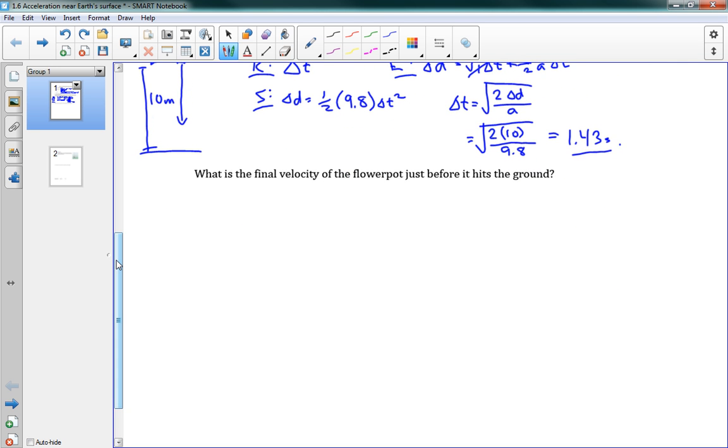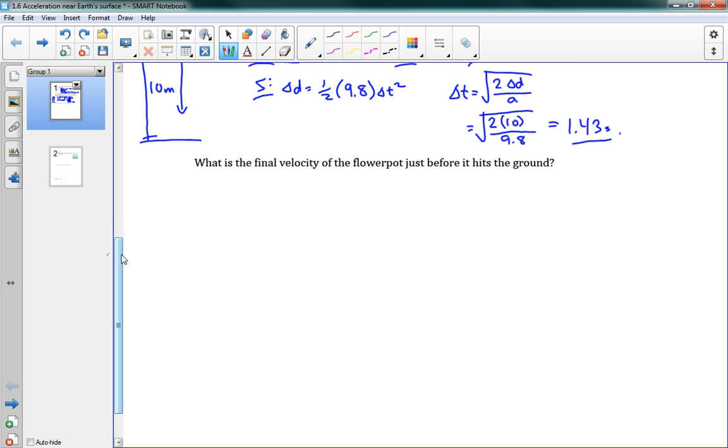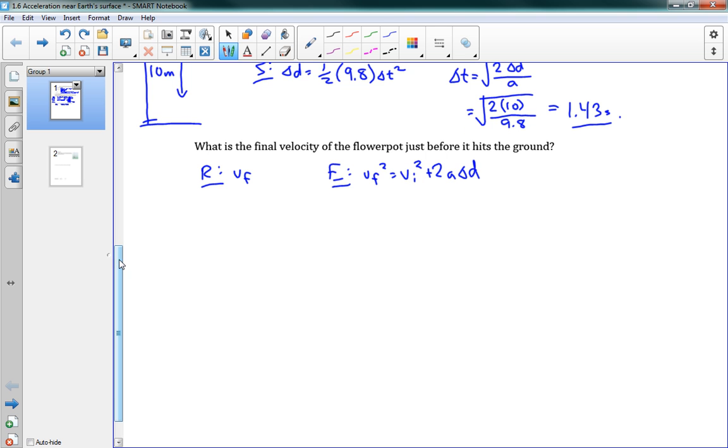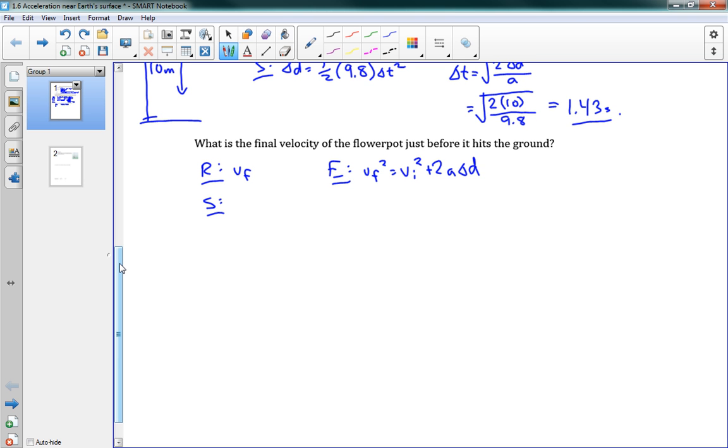Looking at part b, it says, what is the final velocity of the flower pot just before it hits the ground? We have the same given information. Now we're required to find vf. Let's use this equation: vf squared equals vi squared plus 2a delta d. I'm choosing that one because delta t we just calculated in the previous problem. So I want to keep to just the values we were given.